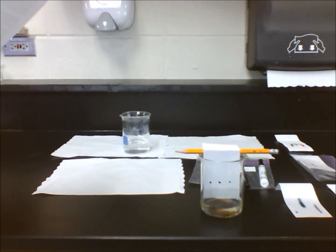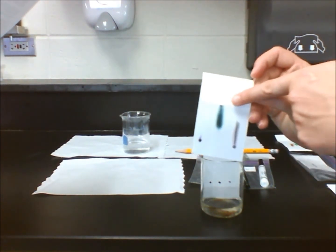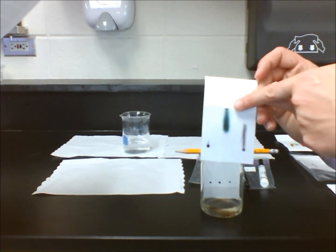The dyes travel up the paper because they are soluble in water. We can determine which dye is more soluble by analyzing the location on the paper. If the solute moves up the paper farther and faster than the other dyes, it's most soluble. If, on the other hand, it moves up slowly, the solute is least soluble.